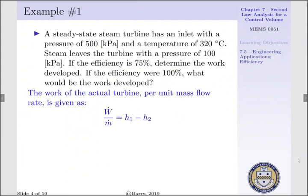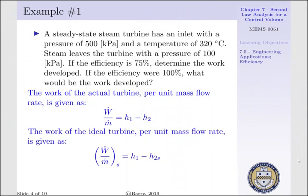For us to begin, we recognize that the actual work of the turbine, per our mass flow rate, is given as our difference of enthalpies, H1 less H2, where H1 is the enthalpy at our inlet and H2 is the enthalpy at our outlet. The work of the ideal turbine, per mass flow rate, is given as H1 minus H2S.